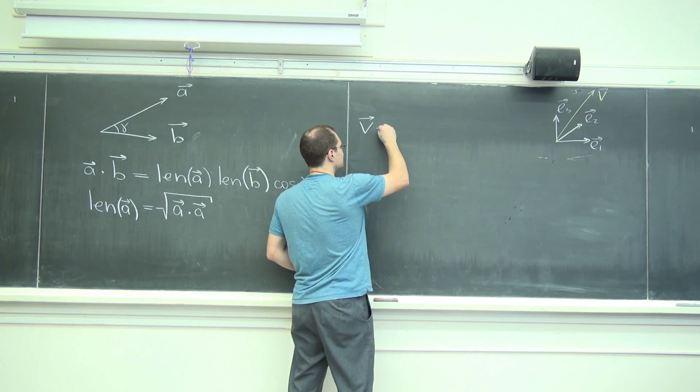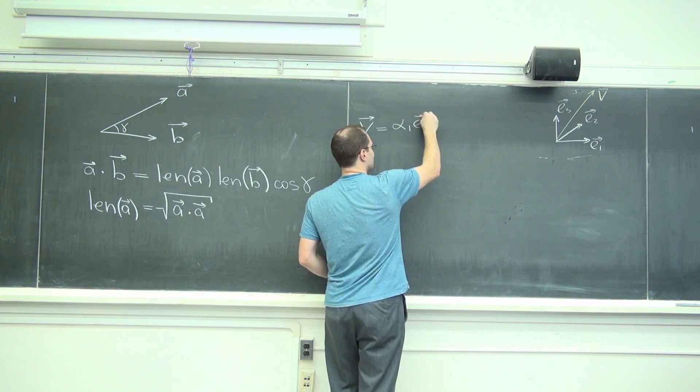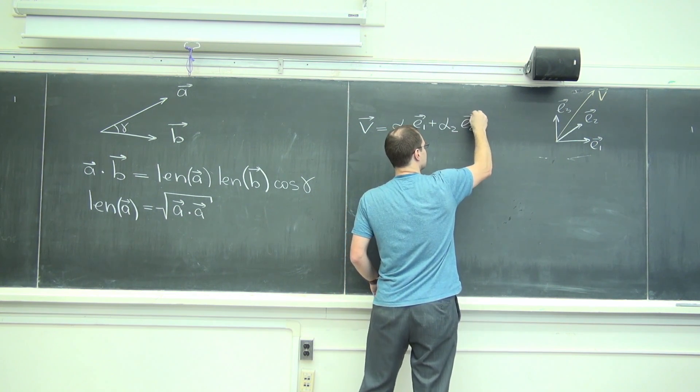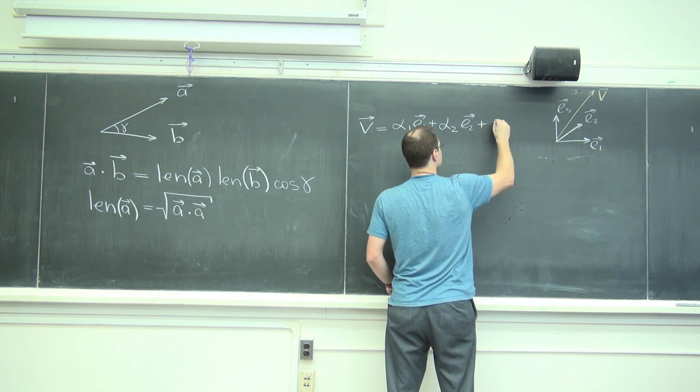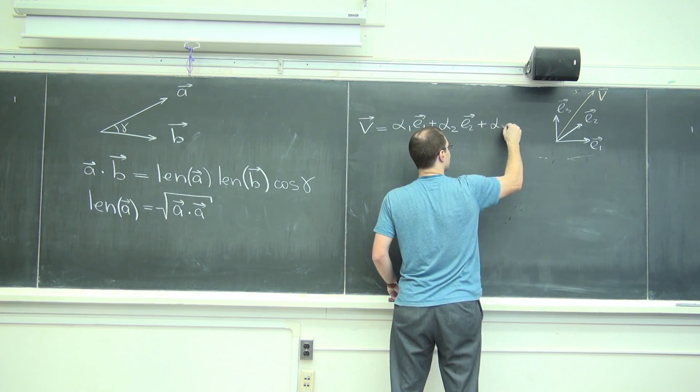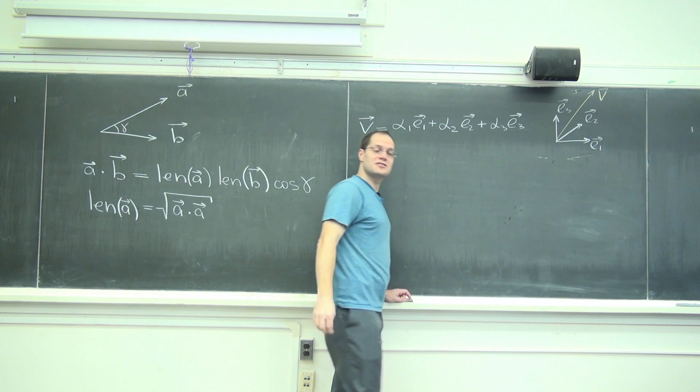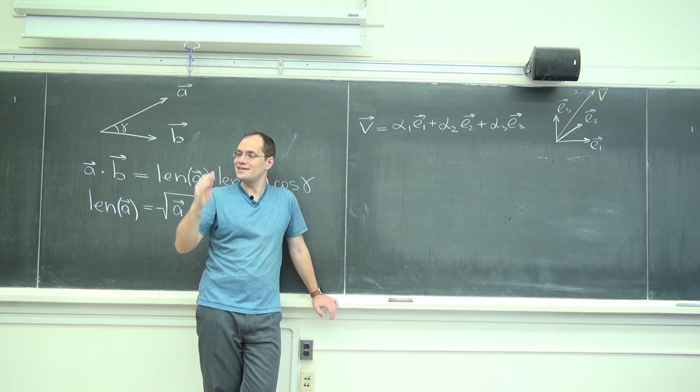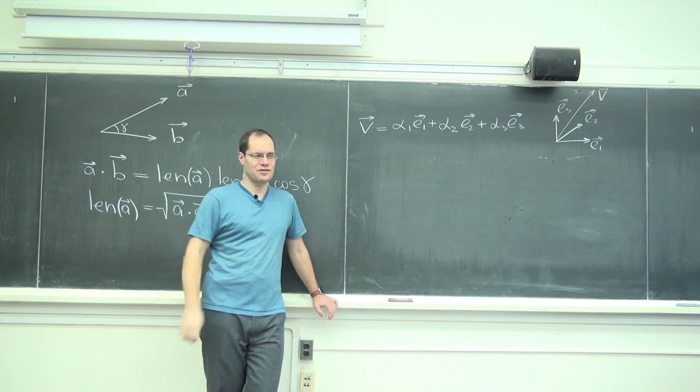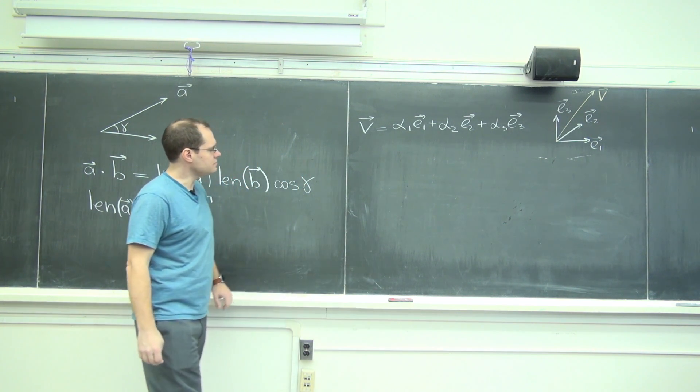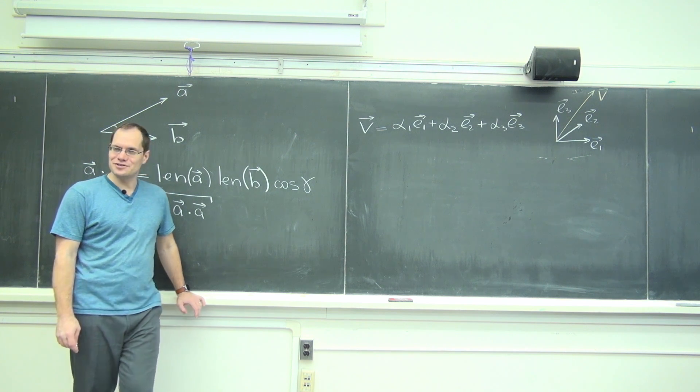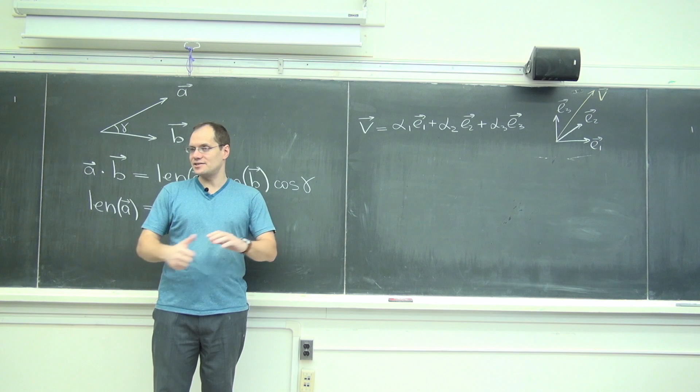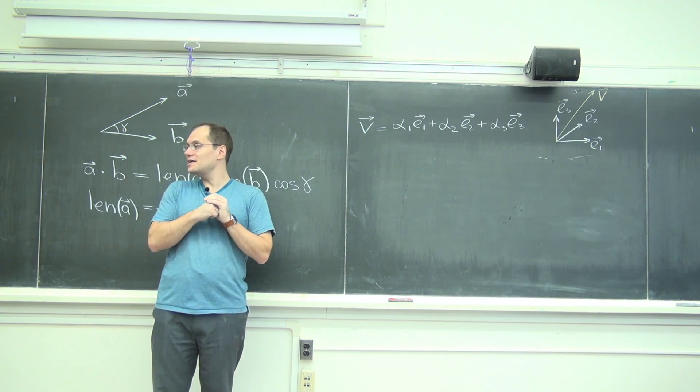But this is an alternative way of thinking about it. So we're looking to decompose V as a linear combination of E1, E2, and E3. So our coefficients are alpha 1, alpha 2, and alpha 3. And so our task is to calculate alpha 1, alpha 2, and alpha 3. We're talking about dot products. Why don't I dot both sides with E1? Can I do that?